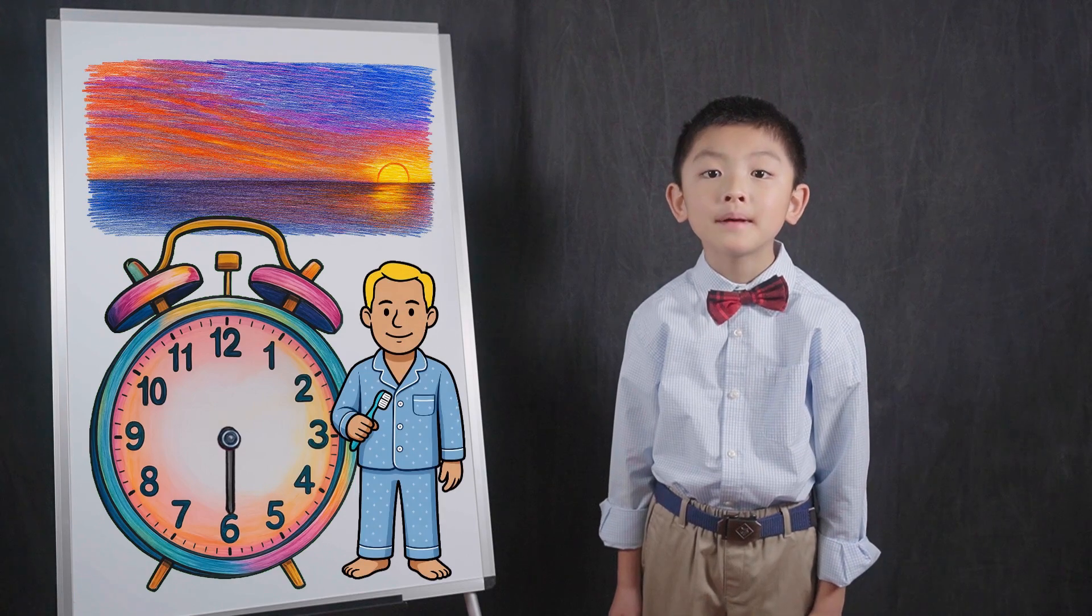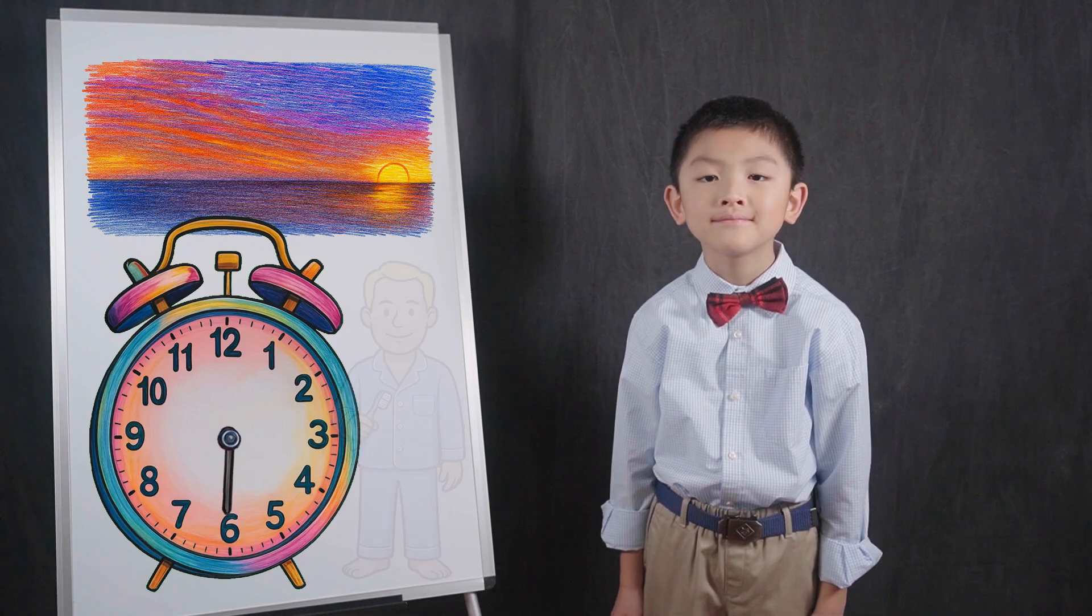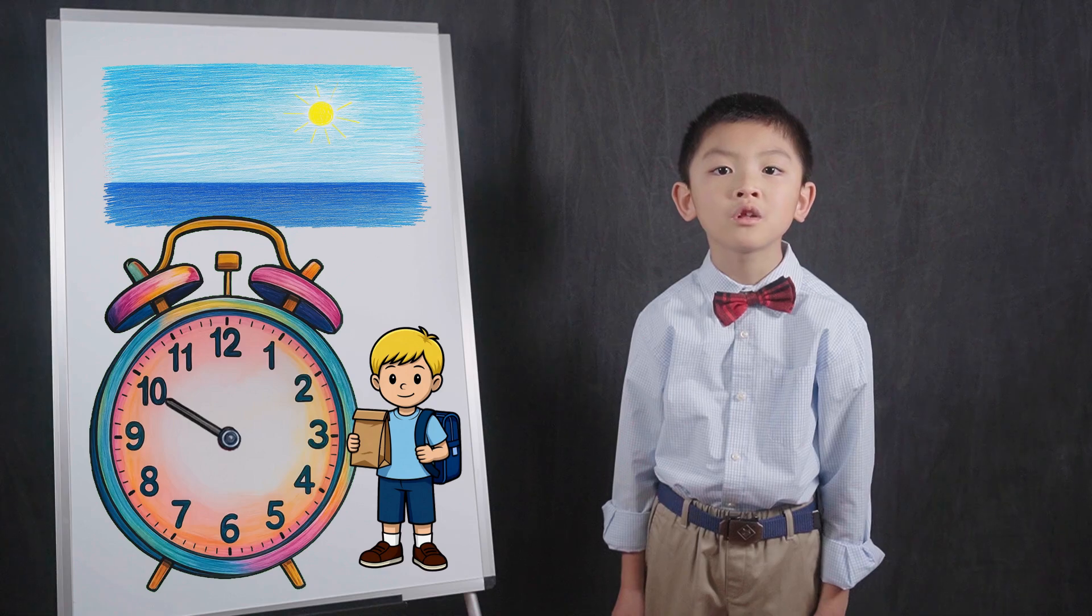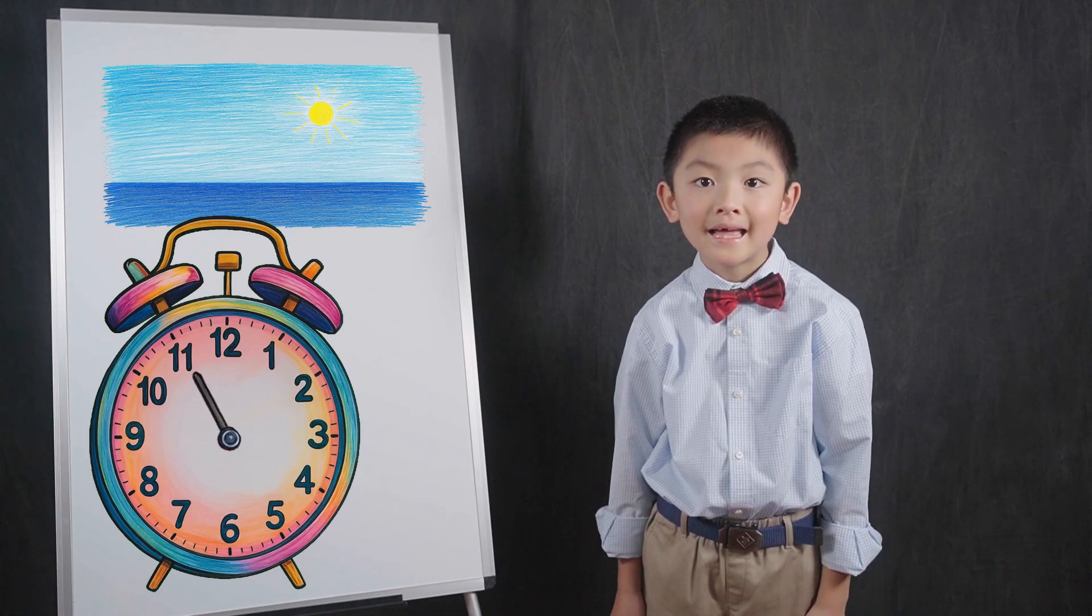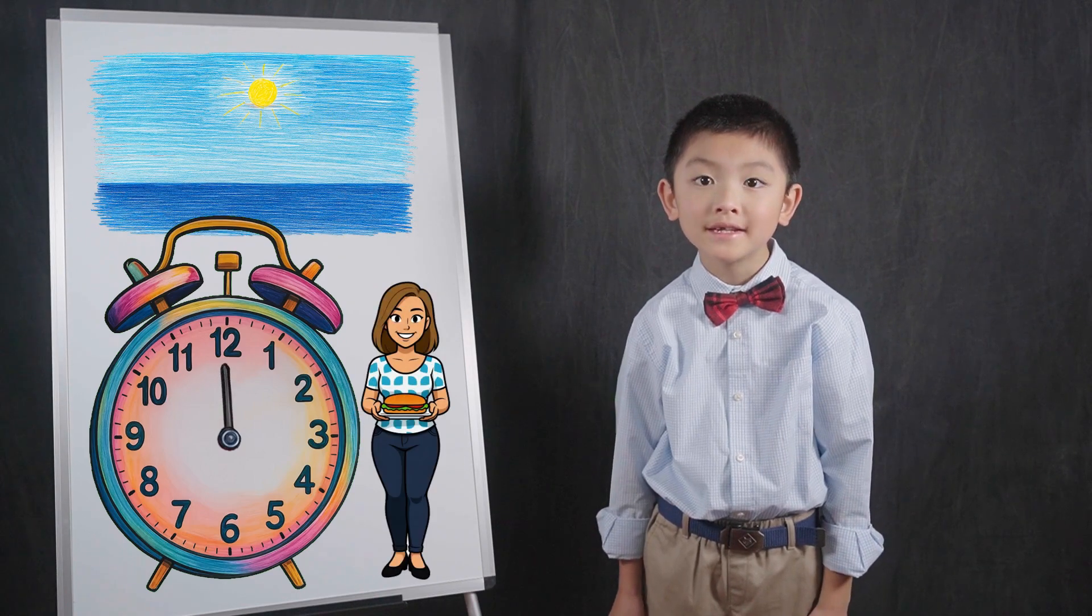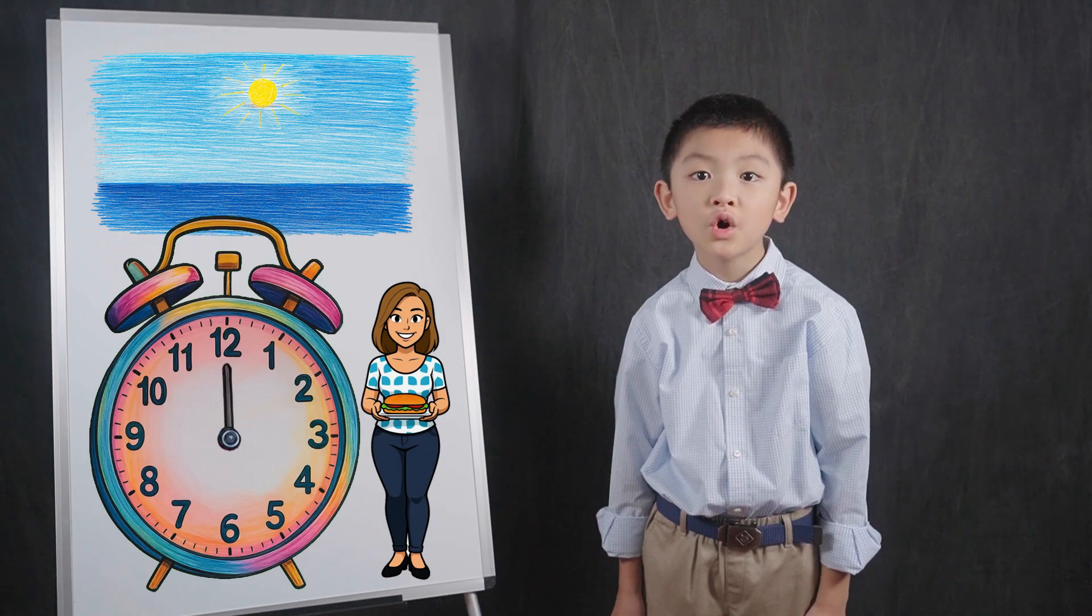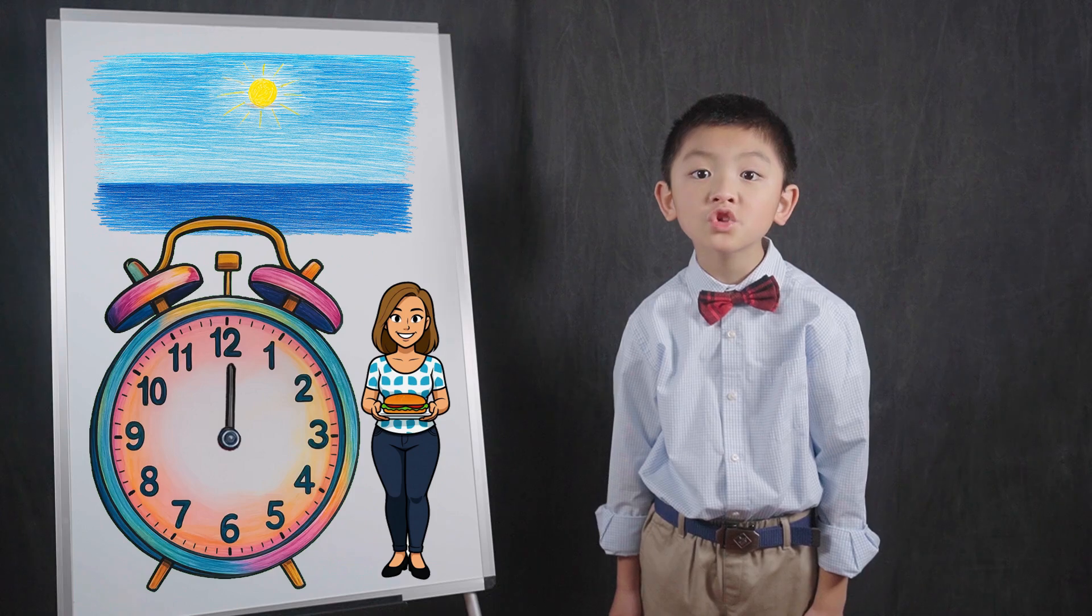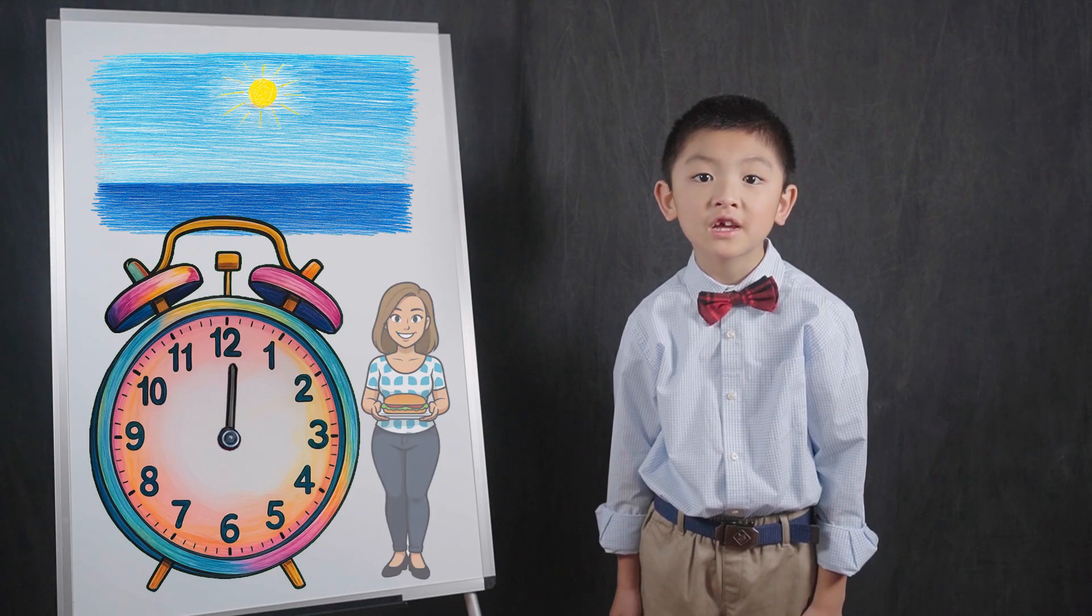At 6 AM, people start waking up. At 10 AM, people are at school. At 12 PM, it is midday, which is also called noon. This is when we eat lunch. This also marks the beginning of the PM cycle of the clock.